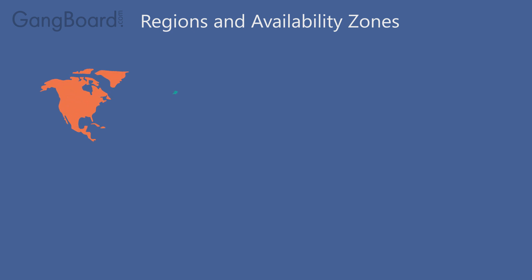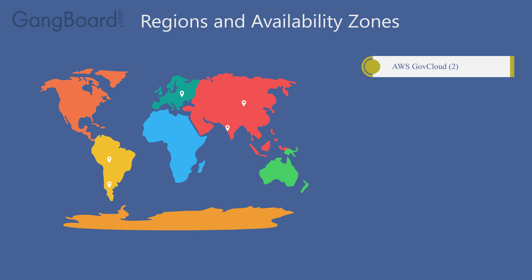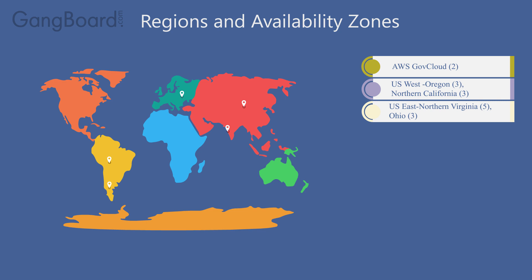The AWS Cloud operates 42 availability zones within 16 geographic regions around the world, with announced plans for 8 more availability zones and 3 more regions. AWS GovCloud 2, US West Oregon 3, Northern California 3, US East Northern Virginia 5, Ohio 3, Canada Central 2.